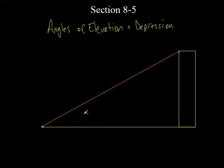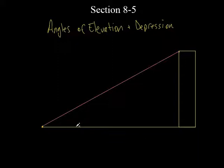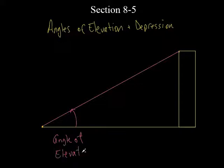The angle of elevation and the angle of depression always start from the horizontal. The angle of elevation goes from the horizontal to the line of sight going up. So starting from the horizontal and going up — that angle is the angle of elevation. We'll put an E here for elevation.